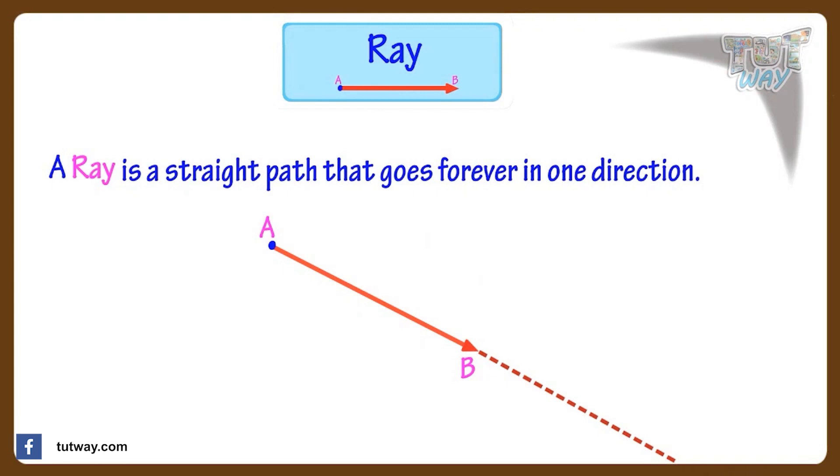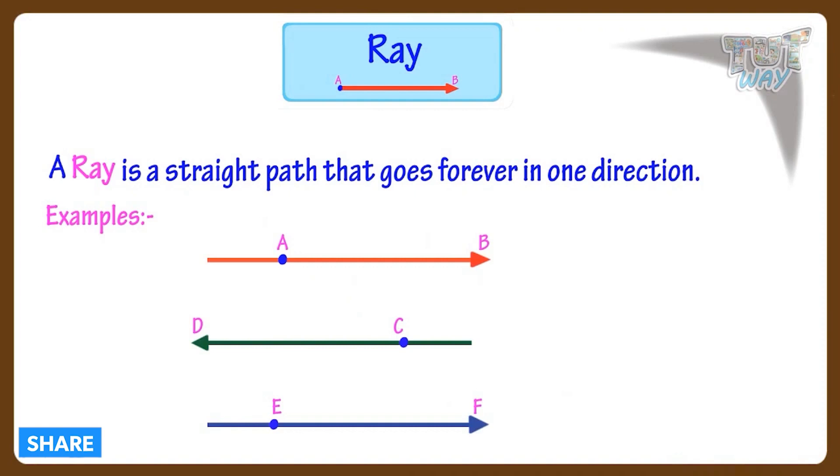It is named like this. The symbol on top of the name shows that this is a ray starting from A and goes forever in direction B. Here are more examples of rays, and they will be named like this.